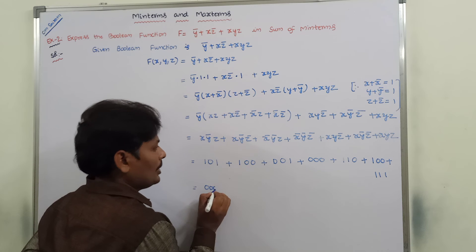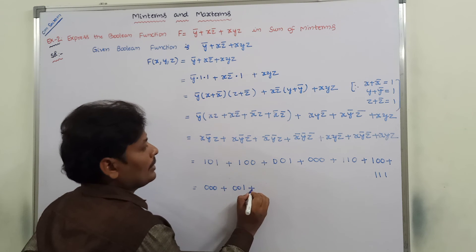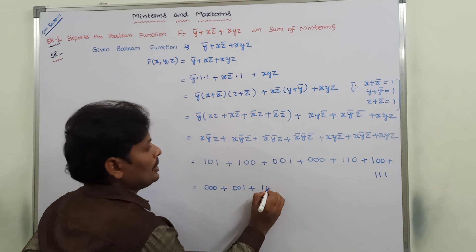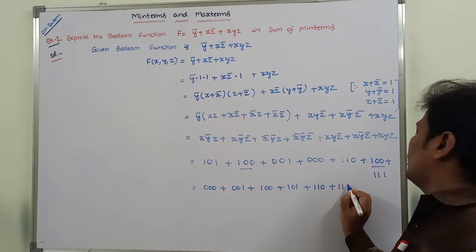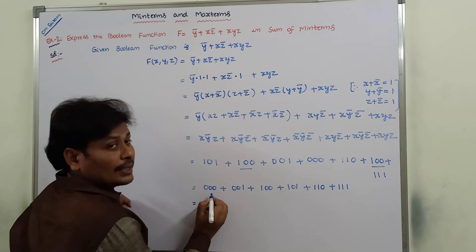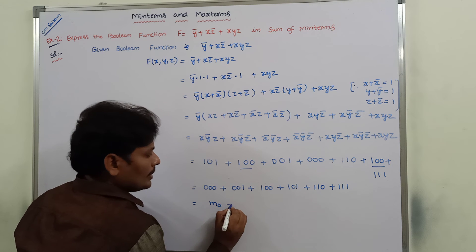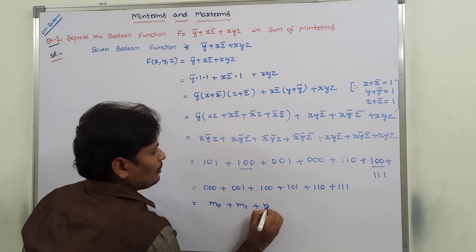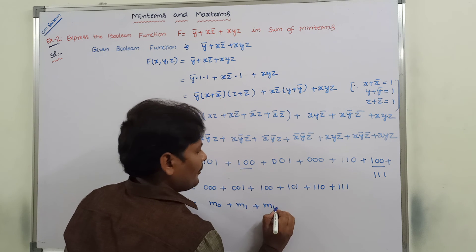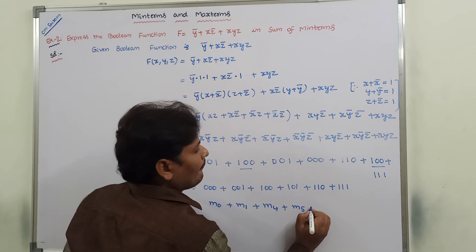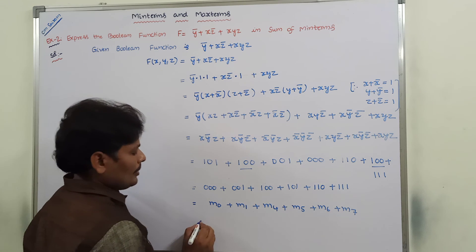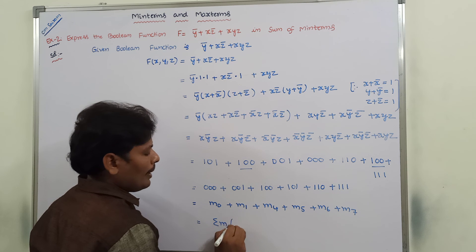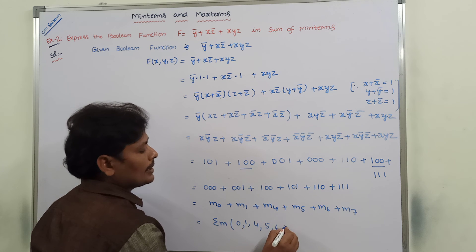Writing the minterms in order: 000 = m0, 001 = m1, 100 = m4, 101 = m5, 110 = m6, 111 = m7. So the sum of minterms is represented as σm(0, 1, 4, 5, 6, 7).